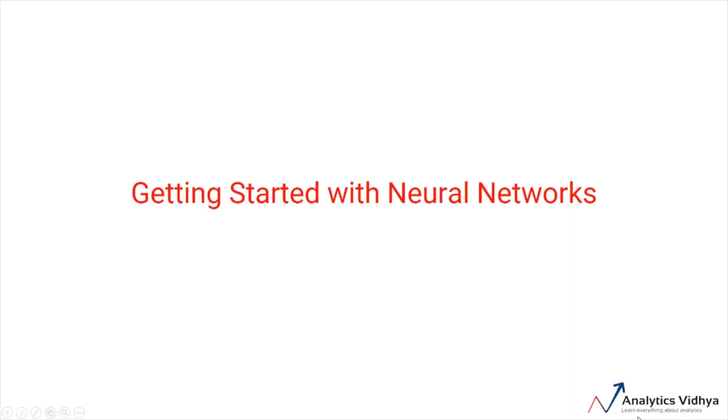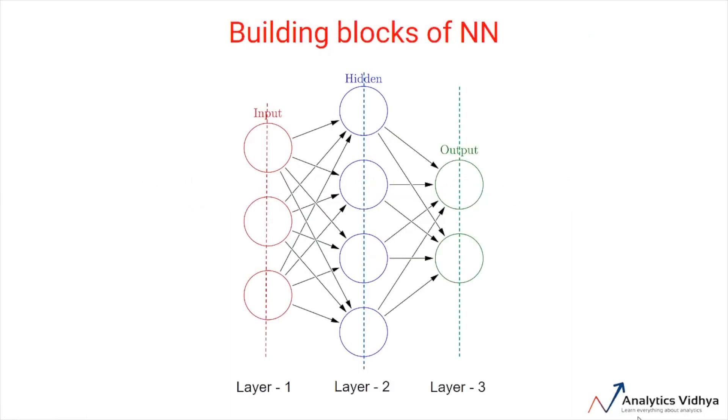Hi, let's talk about neural networks in detail. A neural network is made up of vertically stacked components called layers. Each dotted line here represents a layer.